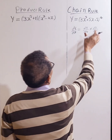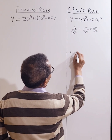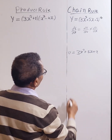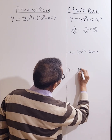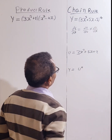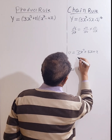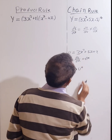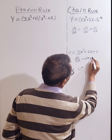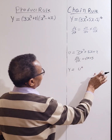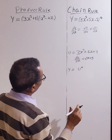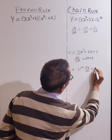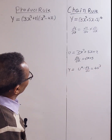Let's go back to the question. Here the inner function is u equals 3x² + 5x + 2, and y equals u⁴. Let's differentiate: du/dx equals 6x + 5, and the constant differentiates to zero. Then dy/du equals 4u³.